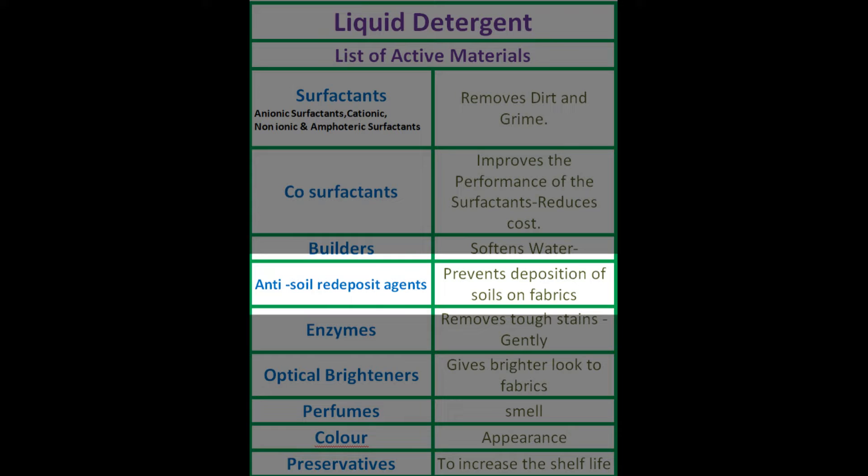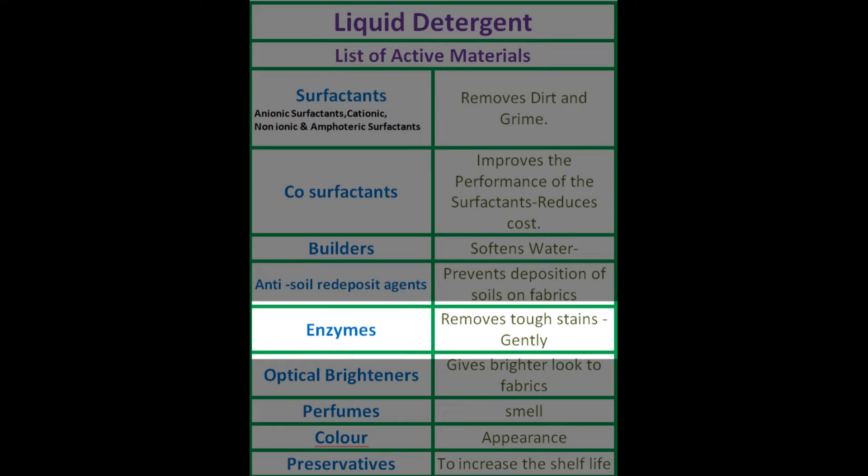And also, partially, it will play the role of a fixative — meaning it will improve the perfume smell over the fabrics, but only partially, not completely. Enzymes are another important and essential material in the case of premium quality liquid detergents.